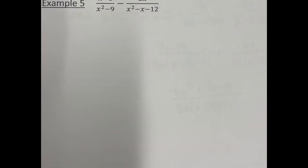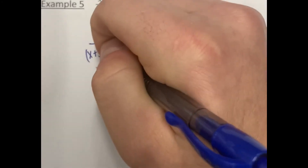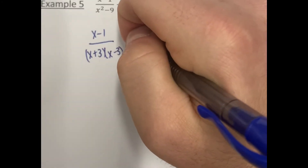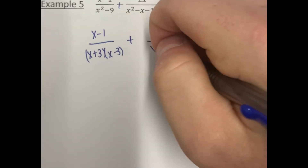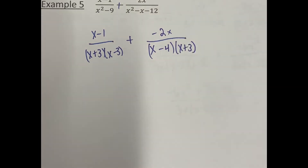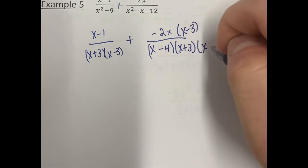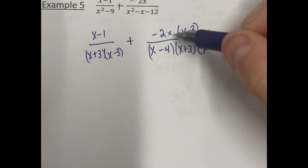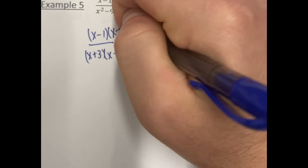In example 5, we need to factor the denominators first. We get x minus 1 over x plus 3 times x minus 3, minus — changing that to plus negative 2x. In the other denominator, we factor: what multiplies to negative 12 and adds to negative 1? That would be negative 4 and positive 3. In this case, both denominators have x plus 3 in common. They do not share x minus 3, so the right expression needs an x minus 3. The left expression is missing x minus 4, so we multiply that expression by x minus 4. Now we have three binomials in the denominator.